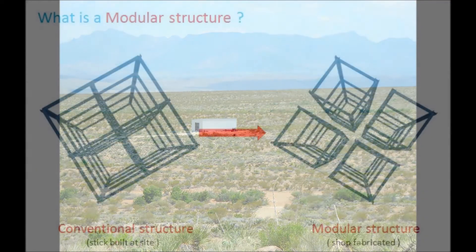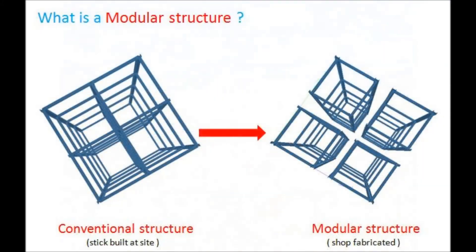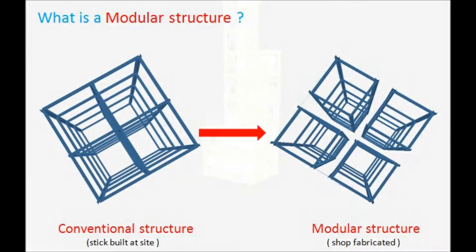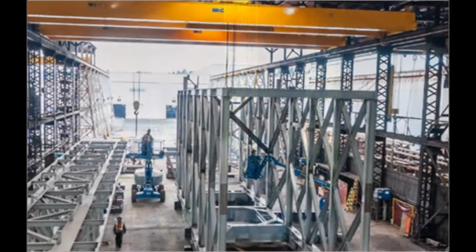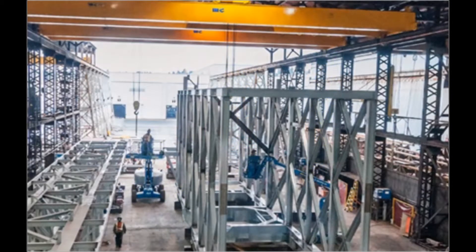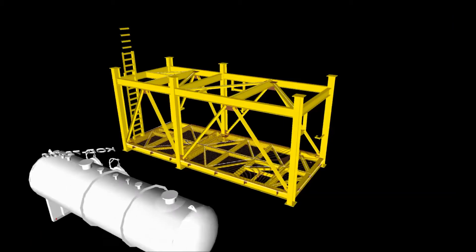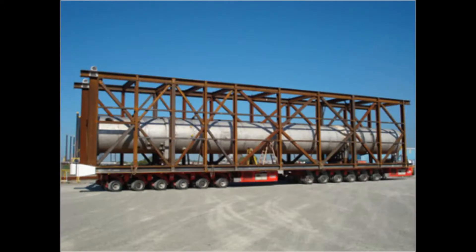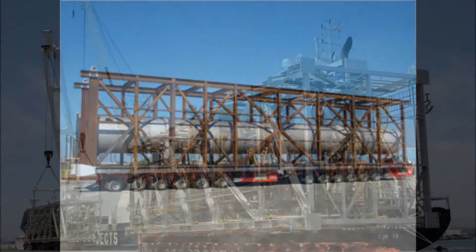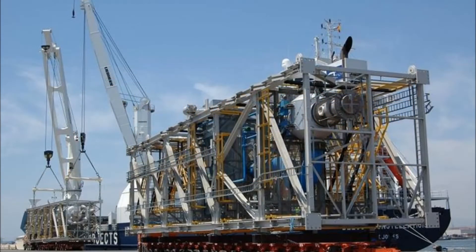So to overcome these problems, we have adopted modular structures. A modular structure is nothing but a whole structure divided into smaller parts called modules. These modules are fabricated in a shop under controlled conditions to utilize skilled labor and achieve better quality, and after complete assembly of equipment, piping, and electrical fixtures, these modules are transported to the site using road, rail, or water transport.